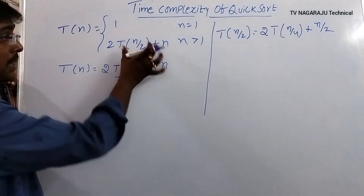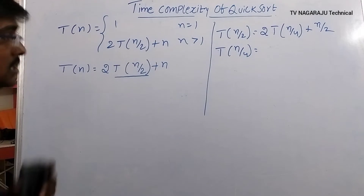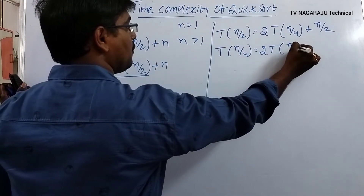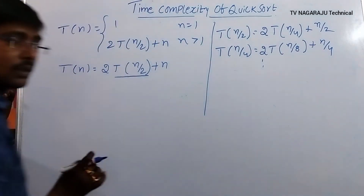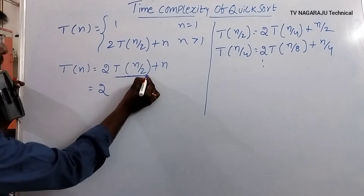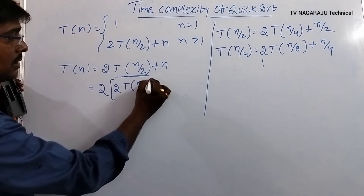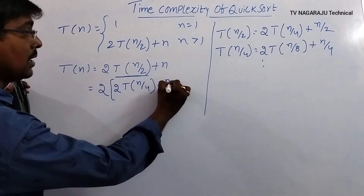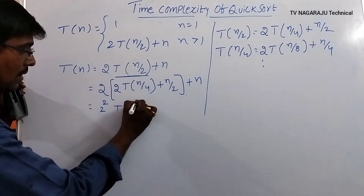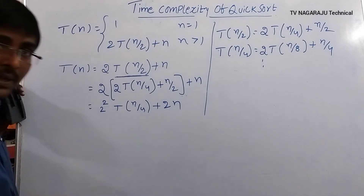Substituting back: T(n) = 2·[2·T(n/4) + n/2] + n = 4·T(n/4) + n + n = 4·T(n/4) + 2n. Substituting again: T(n) = 8·T(n/8) + 3n, and so on.